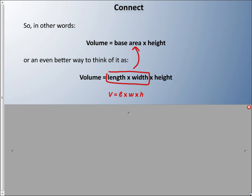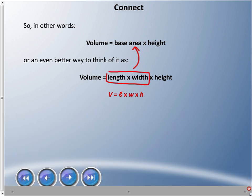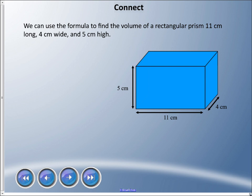We can use that formula, volume equals length times width times height, to find the volume of this rectangular prism which is 11 centimeters long, 4 centimeters wide, and 5 centimeters high. Good practice is always write the formula, and then we substitute. Volume equals the length is 11, we're going to multiply it by the width which is 4, we're going to multiply by the height which is 5.